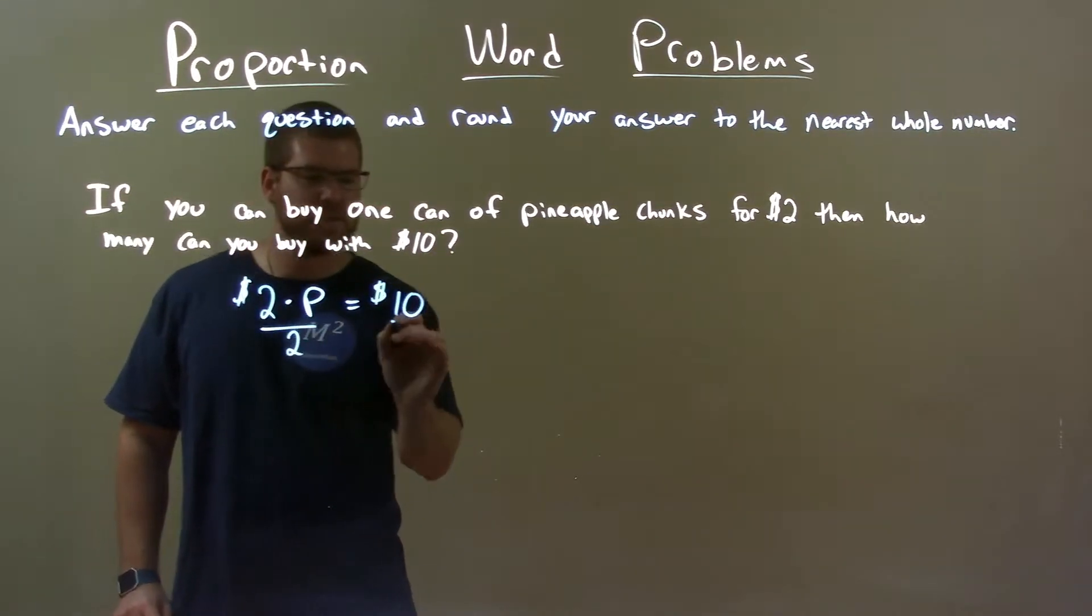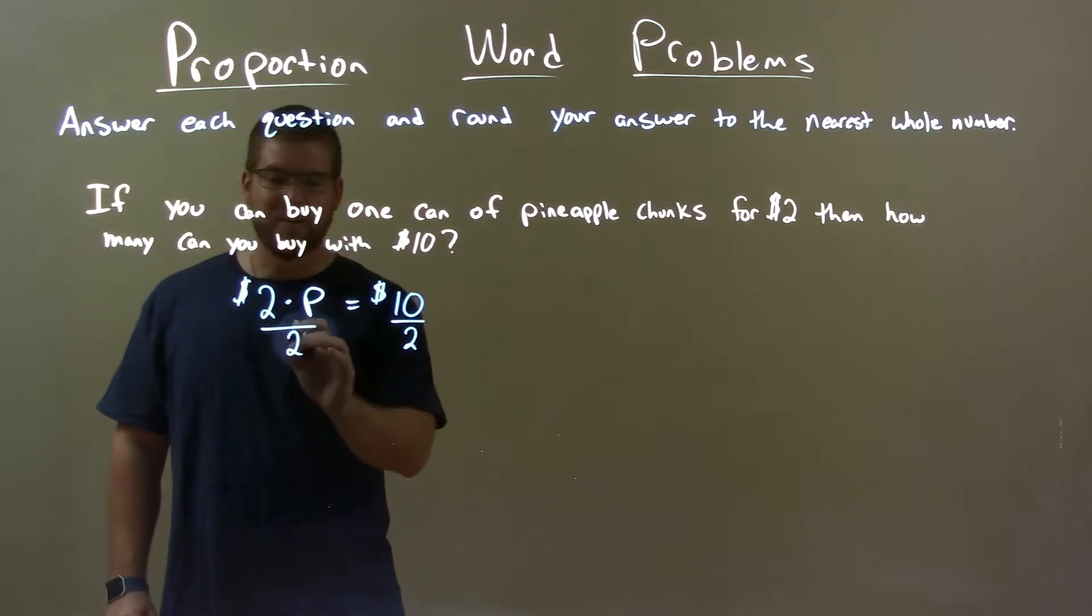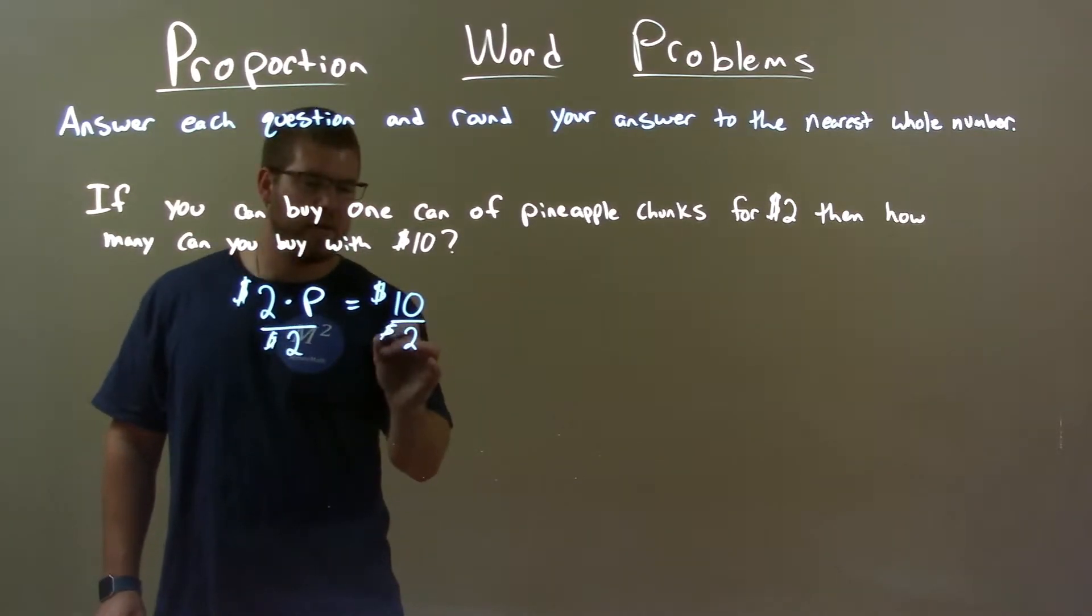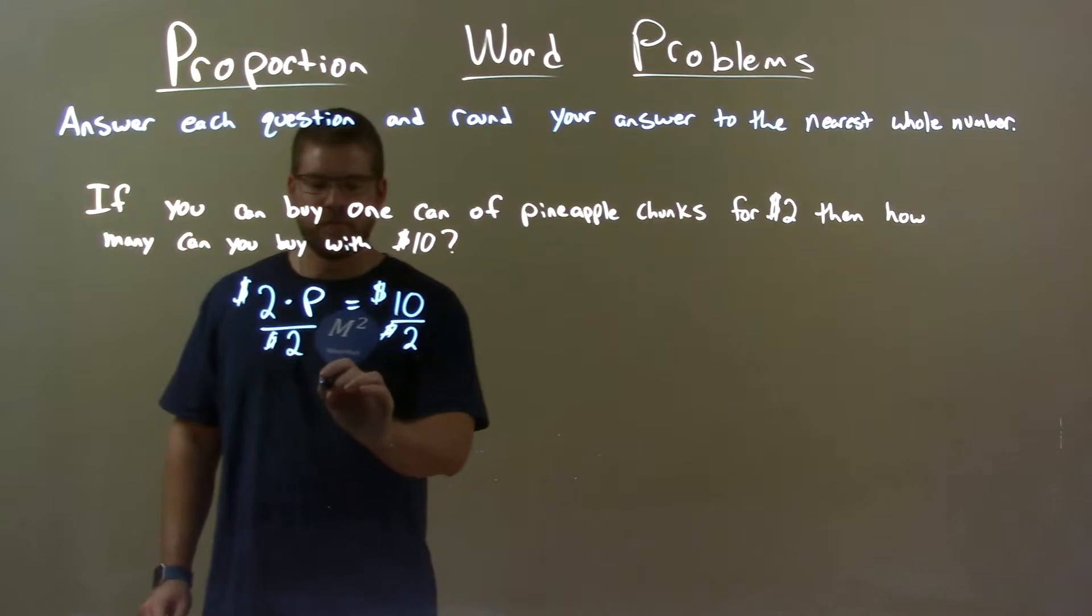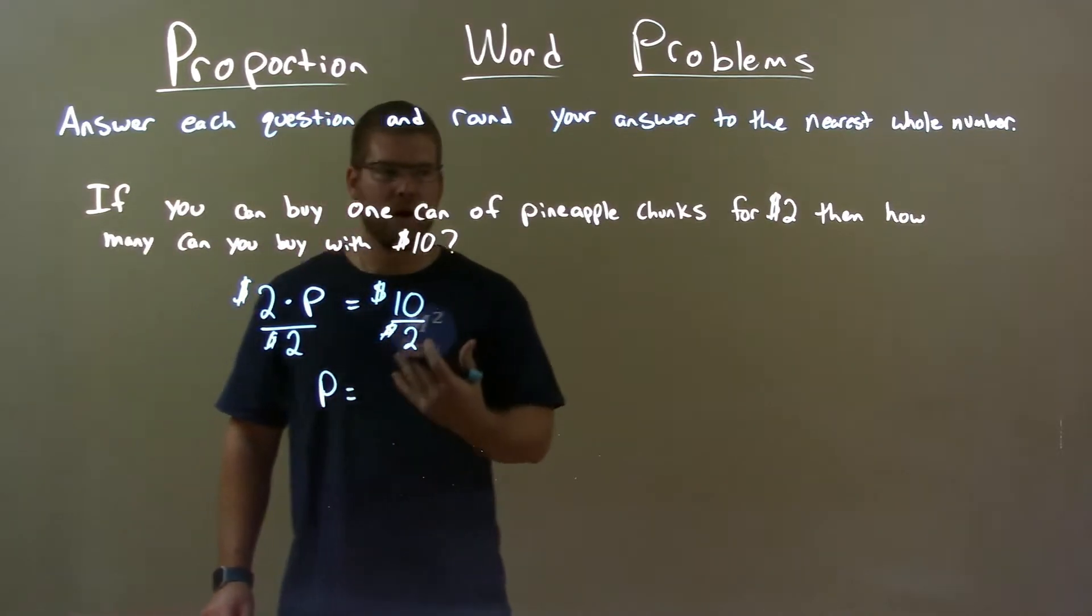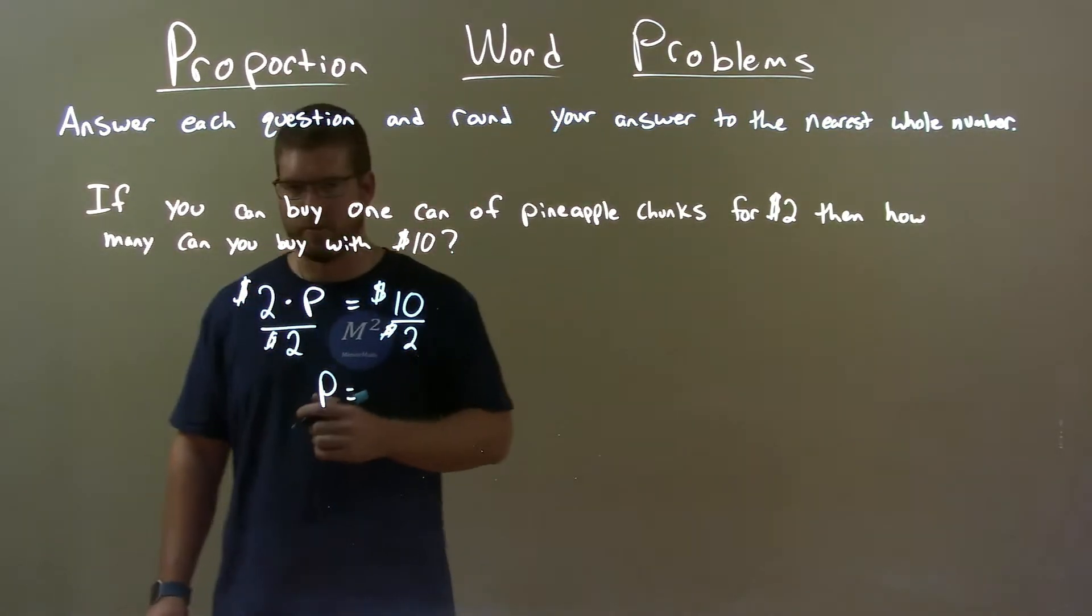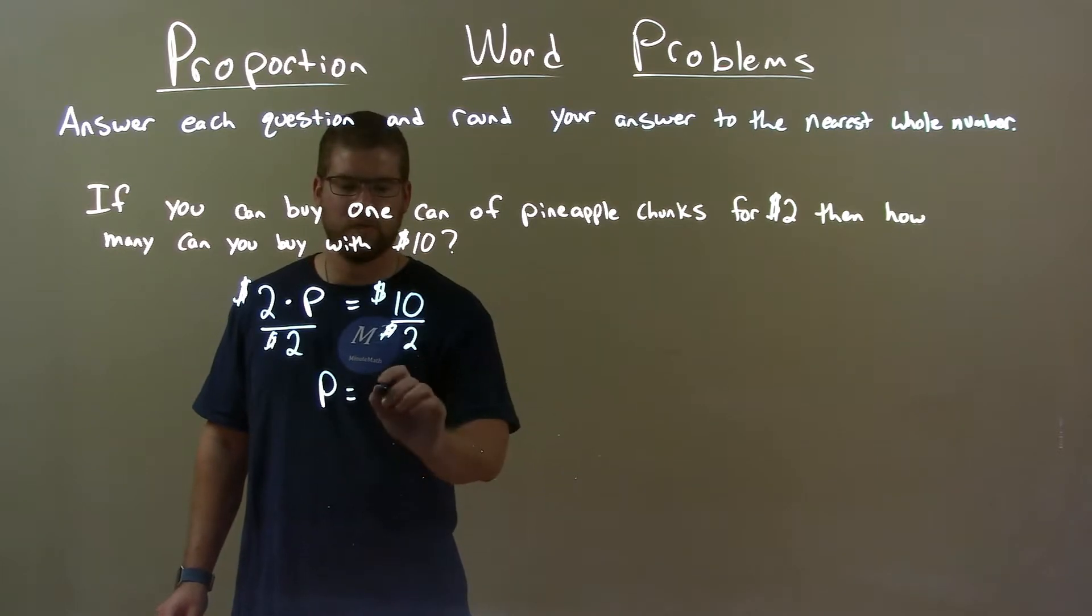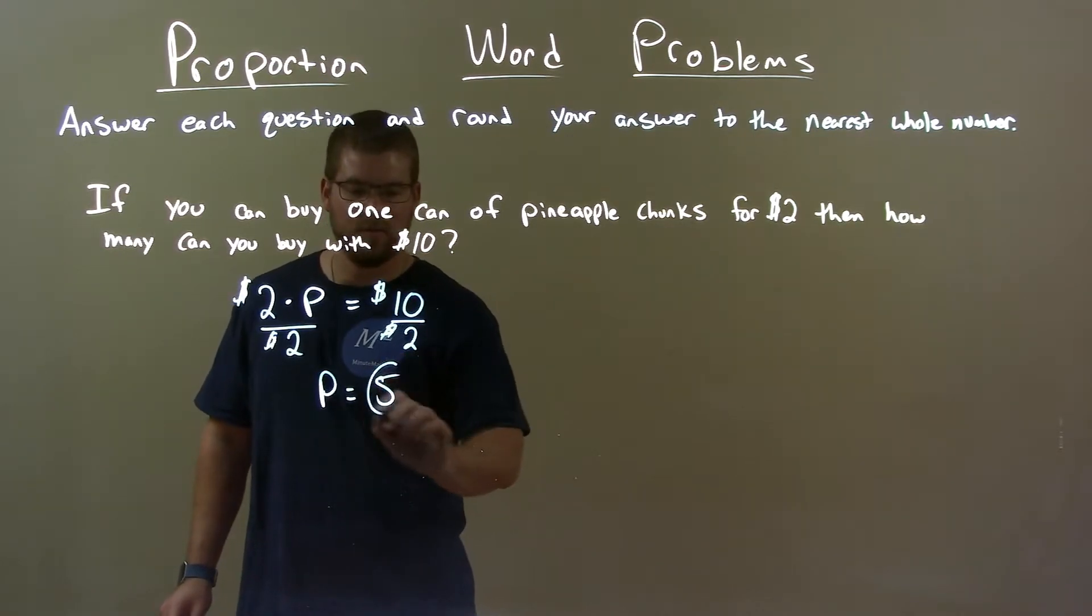If I divide both sides by 2, or $2, it doesn't really matter here. Divide by 2. Well, that leaves us with P, the number of pineapple chunks we can buy or cans of pineapple chunks. 10 divided by 2 is 5. And so our answer here is just 5.